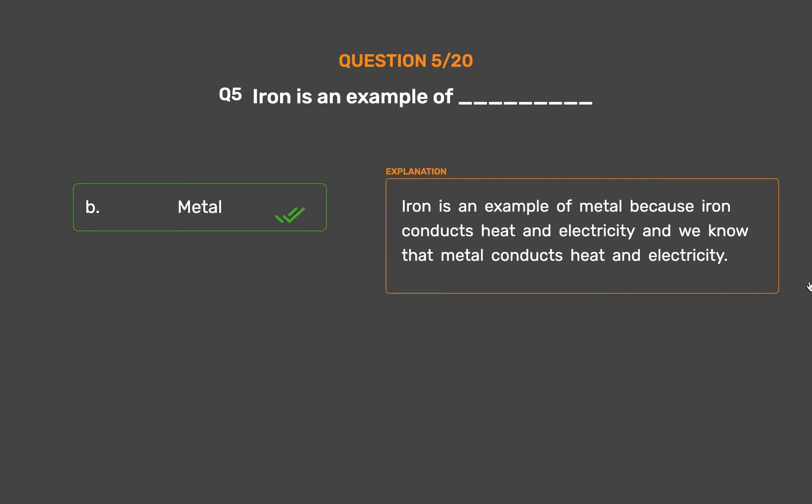Iron is an example of metal because iron conducts heat and electricity, and we know that metals conduct heat and electricity.